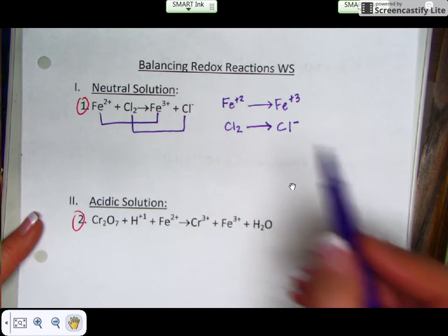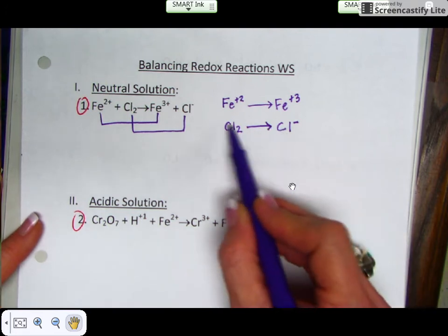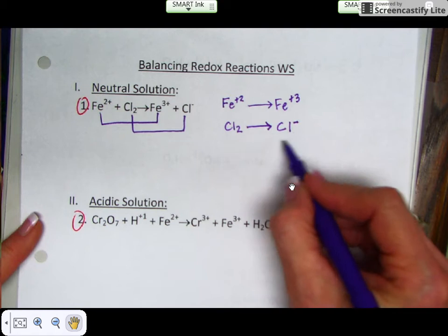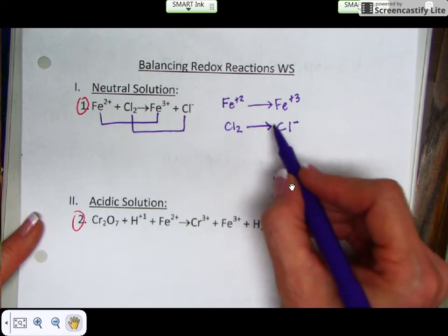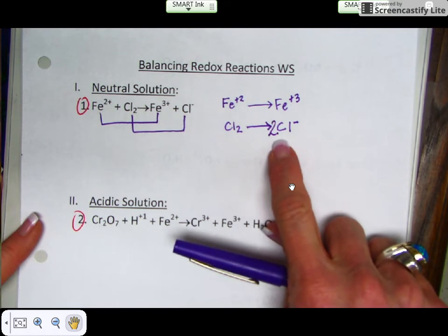But here in this half reaction you have two chlorines and only one chlorine over here. So we can use the coefficient 2, and that gives me two chlorines on both sides.